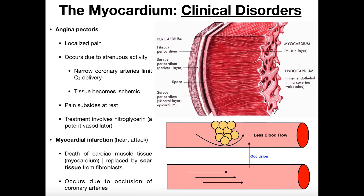The short answer is a heart attack, but we want to understand why. There are two clinical disorders where we have diminished oxygen delivery to the heart — the myocardium specifically. One is angina pectoris, and the more severe one is the myocardial infarction, which is a fancy term for a heart attack.